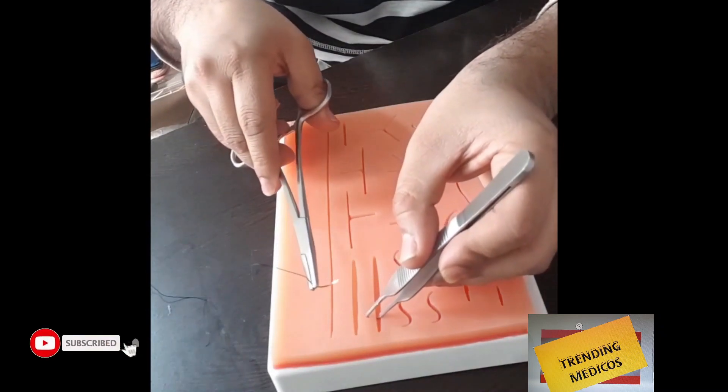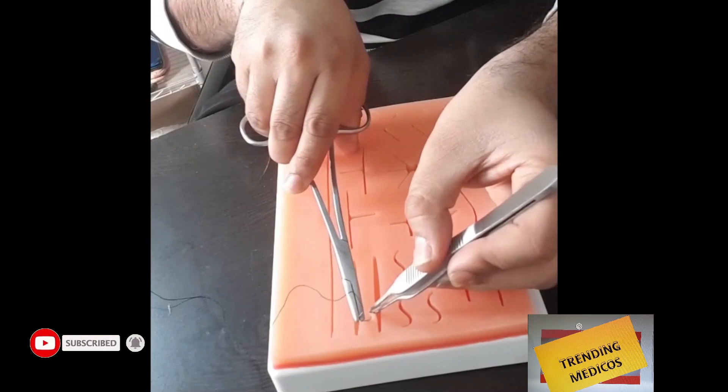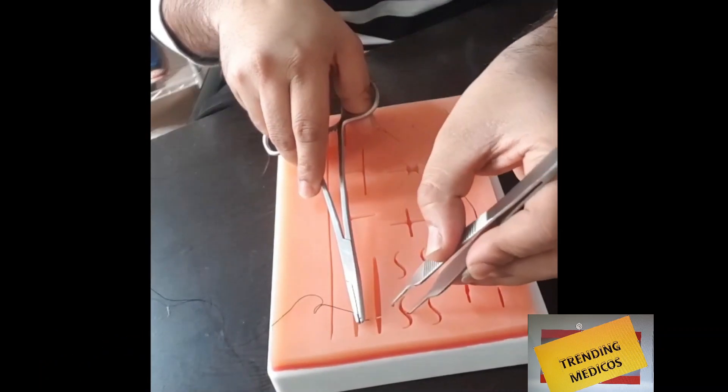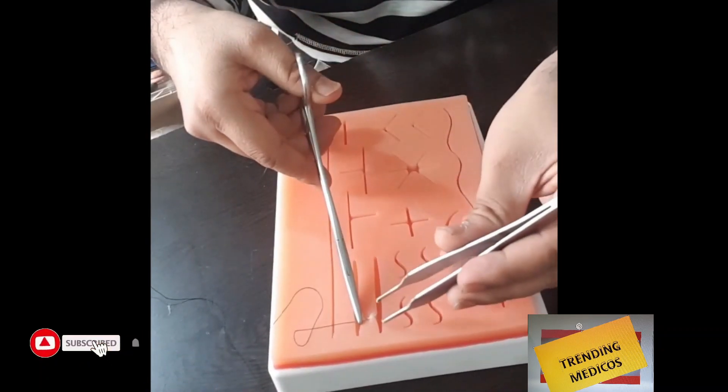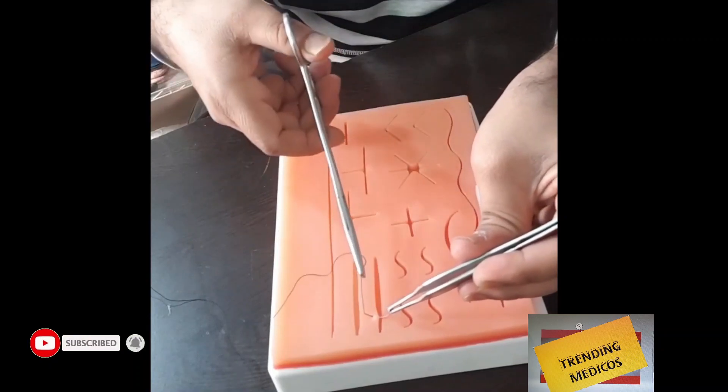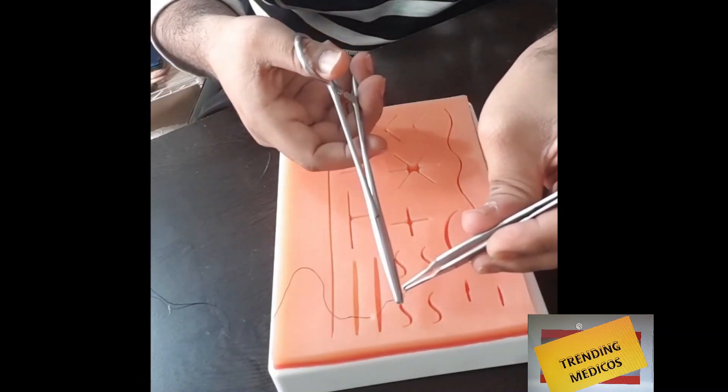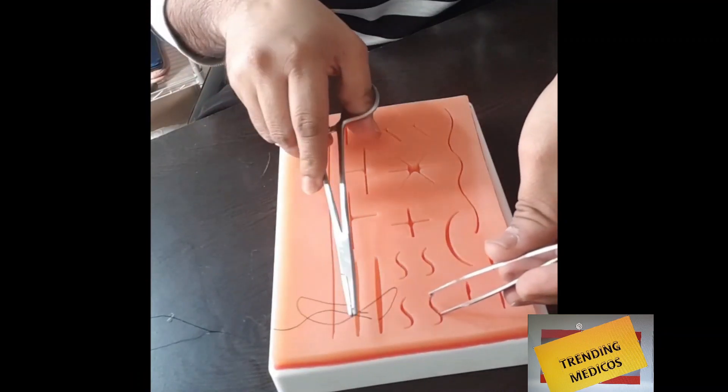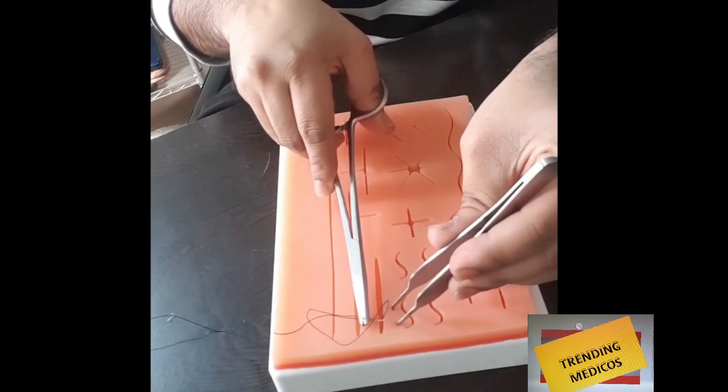What we need is a forcep, a needle holder, and scissors. You have to go perpendicular to the incision, and your movement should be at the wrist joint. Initially when you're learning, you should go one by one - one edge should be inserted first, then the other edge.